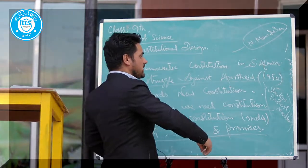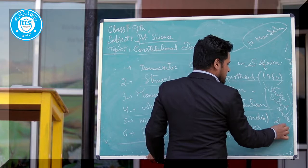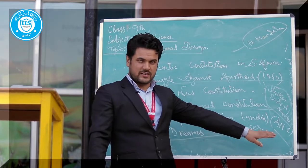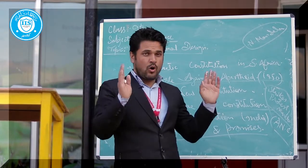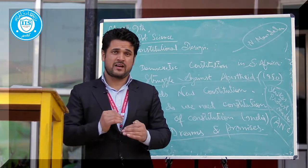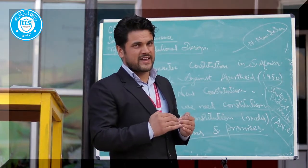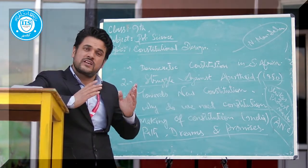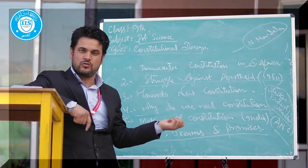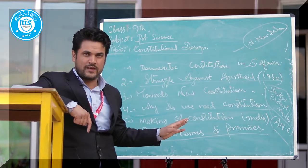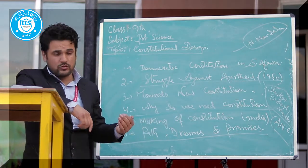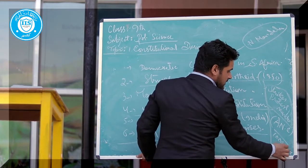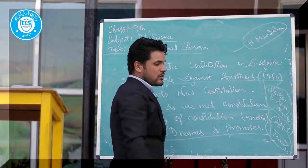Then the African National Congress was built. This was an umbrella organization that worked for the whole community in terms of the black segregation movement against the whites. Many countries supported and opposed the apartheid regime, and the black segregation movement took various forms of resistance against white rule.